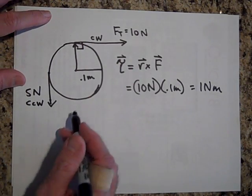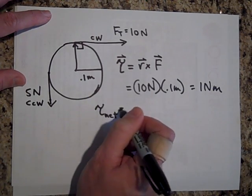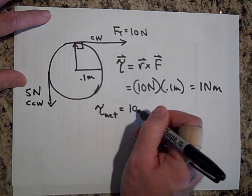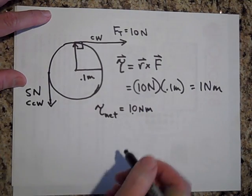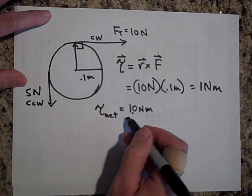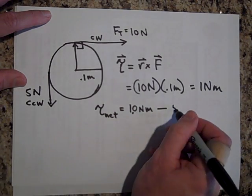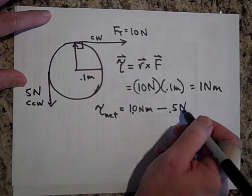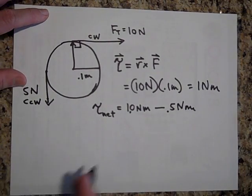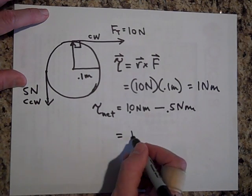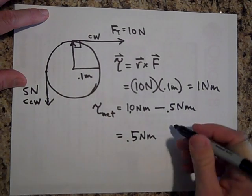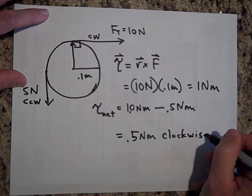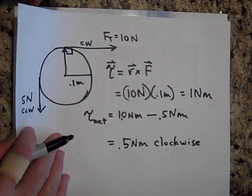And so the net torque due to these two is going to be 10 newtons times 0.1 meters. So 0.1 newton meters. There's a dot there, decimal. But you're going to have to subtract this one. So it'd be five newtons times 0.1 meters. So that's going to be 0.5 newton meters. And so the net torque is going to be 0.5 newton meters and we'll say counterclockwise or clockwise. So it will rotate clockwise.